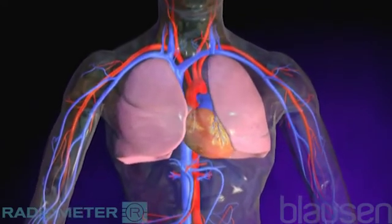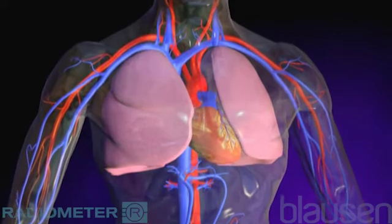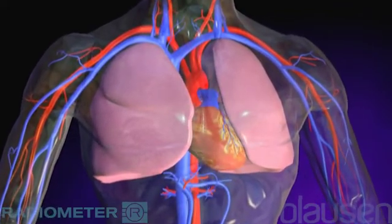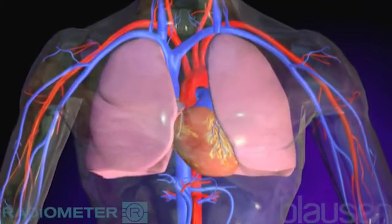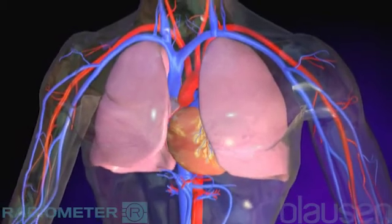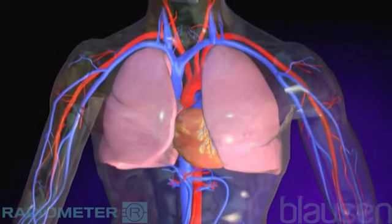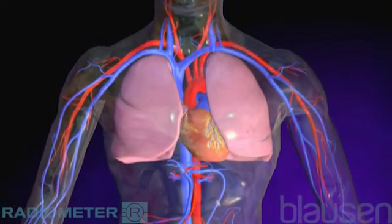The circulatory system carries blood throughout the body via an intricate network of arteries and veins. The venous system is the section of the circulatory system that uses veins to return the used or deoxygenated blood to the heart and lungs.